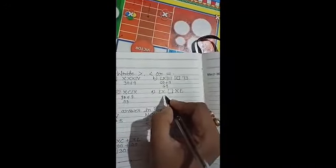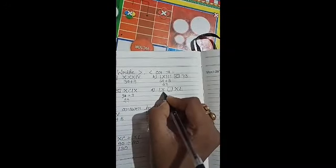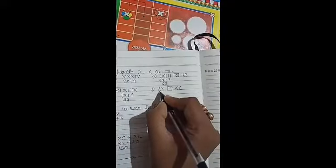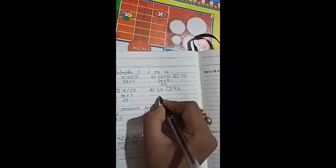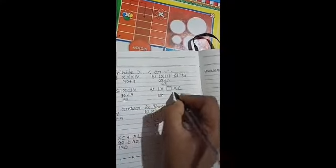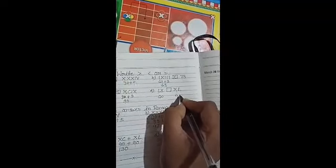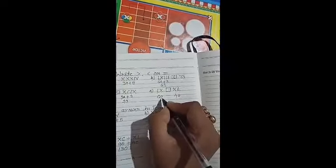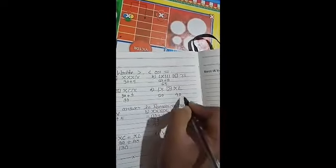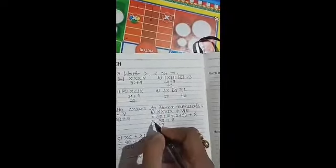Question number D. LX means 50 plus 10, 60. And, XL means 40. So, 60 is greater than 40. Got it?